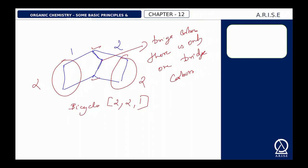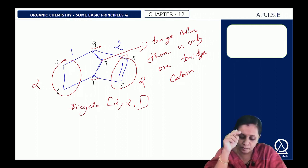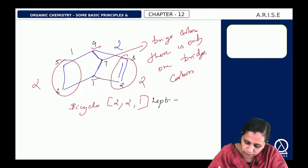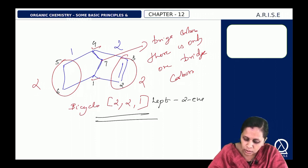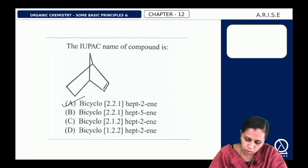It is an alkene, so numbering starts from the bridging carbon. You can number either way but must give priority to the double bond. Numbering: 1, 2, 3, 4, 5, 6, 7 — starting from the bridging carbon and ending at the bridgehead carbon. The name is bicyclo[2.2.1]hept-2-ene, which is option A.